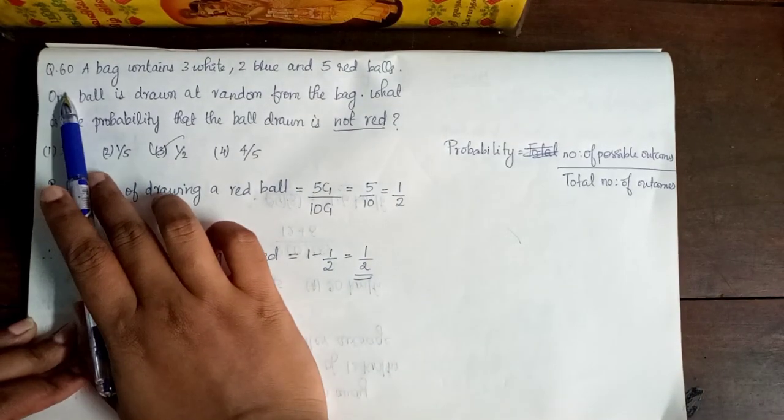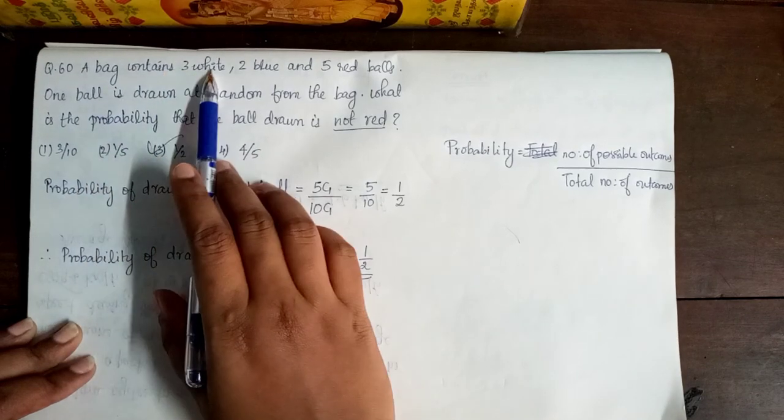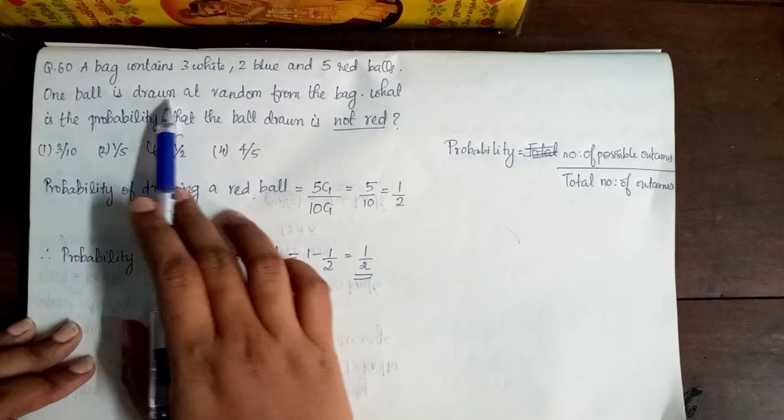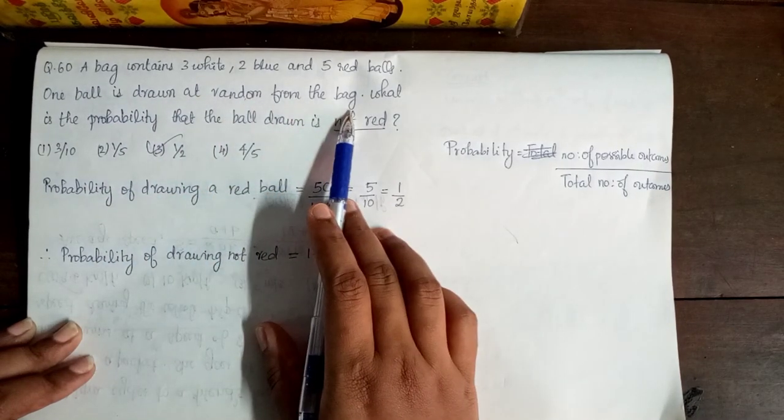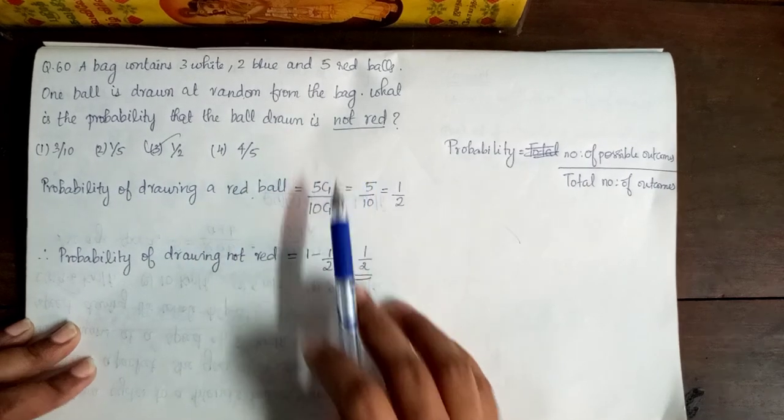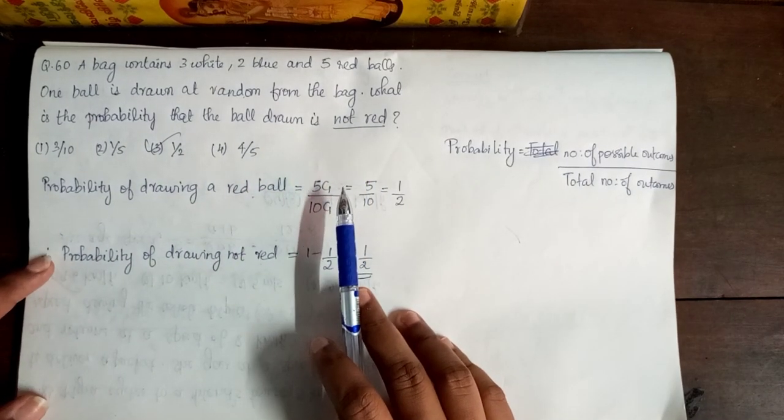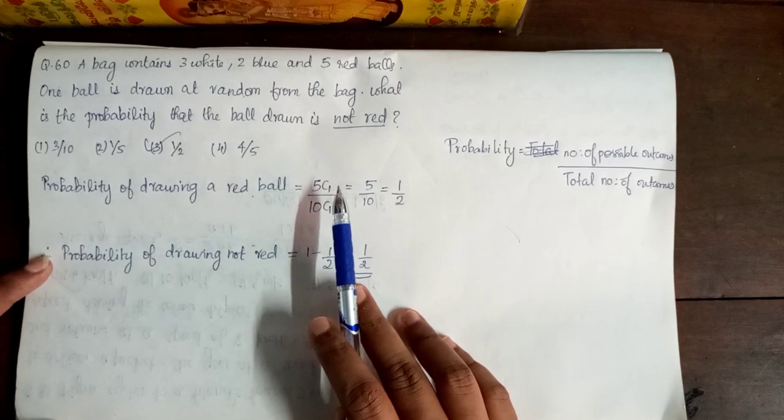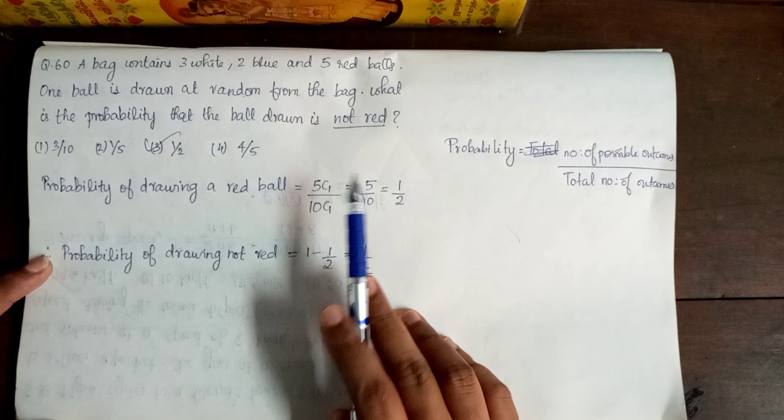Next question is 60. A bag contains 3 white, 2 blue and 5 red balls. One ball is drawn at random from the bag. What is the probability that the ball drawn is not red? One bag is 3 white, 2 blue and 5 red balls. That's why I have one ball added. That ball is red.